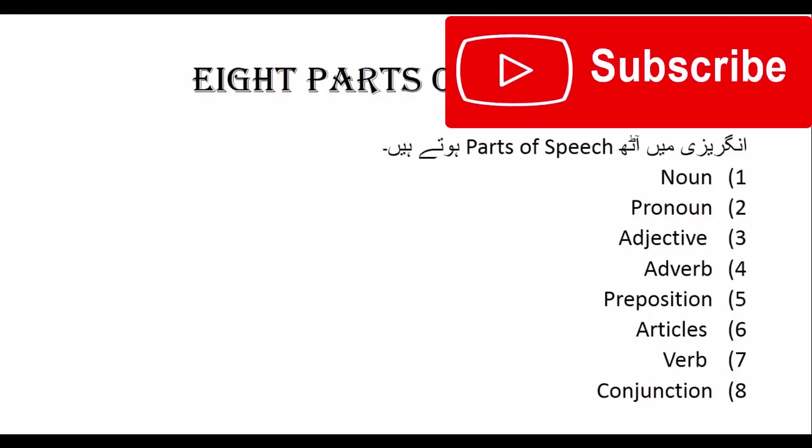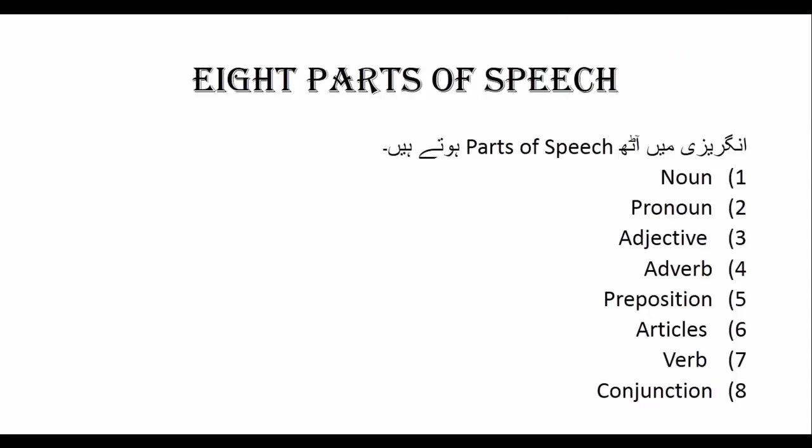جس طریقے سے ایک گاڑی میں مختلف قسم کے پارٹس ہوتے ہیں، اس کو چلانے کے لیے ٹائر ہوتا ہے، انجن ہوتا ہے، اسی طریقے سے انگلیش لینگویج کو چلانے کے لیے یہ آٹھ پارٹس آف سپیچ ہیں۔ ان کے بغیر انگلیش کی گاڑی نہیں چل سکتی۔ آپ کو آٹھ پارٹس آف سپیچ میں مہارت حاصل کرنی ہے۔